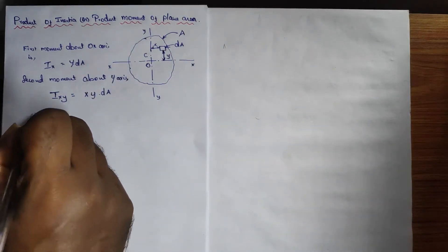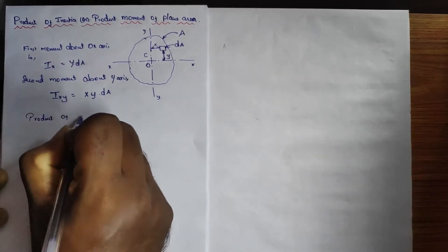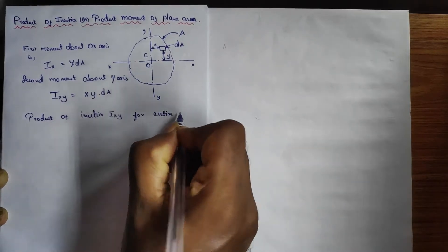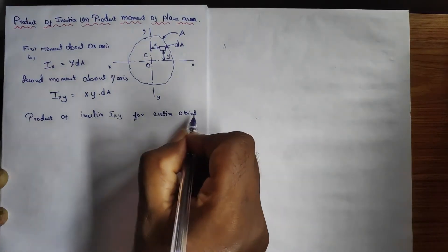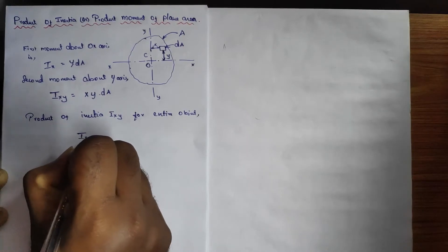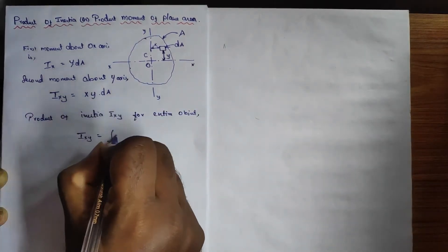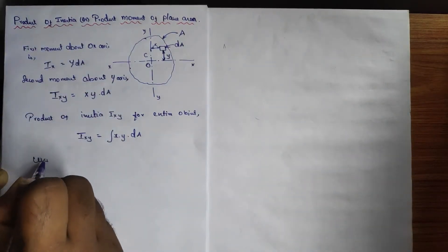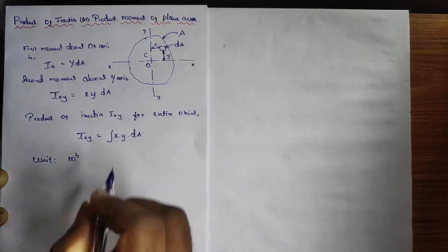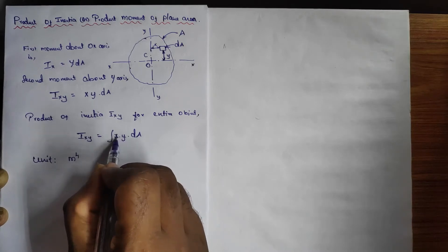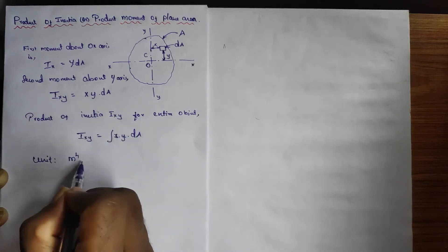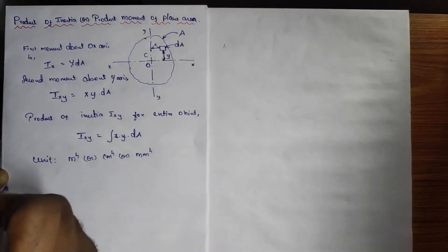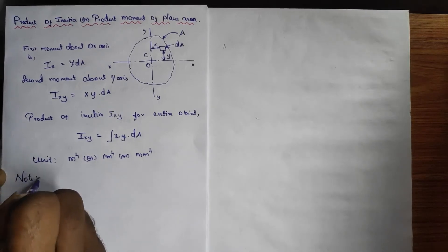For the product of inertia Ixy for the entire area, it will be Ixy equals the integral of xy·dA. Regarding units, area is in meter squared, and the product of x and y gives meter times meter, so entirely we get meter to the power 4, or centimeter to the power 4, or millimeter to the power 4. This is the unit, and here is an important note we need to take.